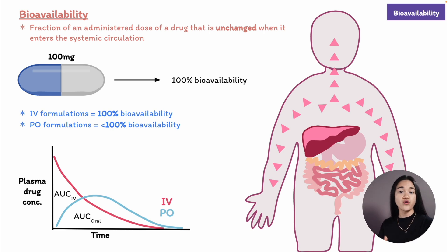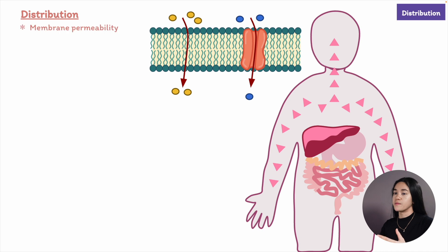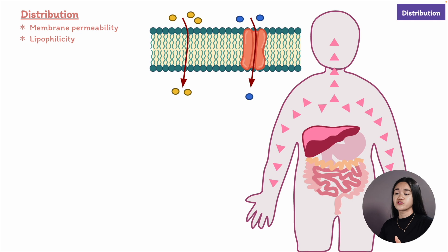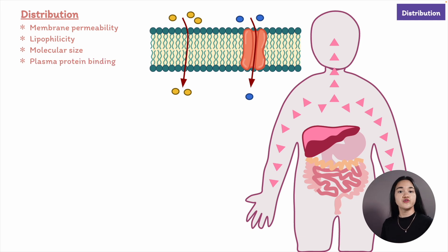After a drug is absorbed, it gets distributed to various tissues around the body such as muscle and fat. Factors influencing drug distribution include membrane permeability, lipophilicity — lipophilic drugs easily cross membranes and leave the bloodstream, while hydrophilic molecules are more likely to remain in the bloodstream — molecular size, and plasma protein binding. Plasma proteins such as albumin slow down distribution by reducing the amount of free, unbound drug available to enter tissues.